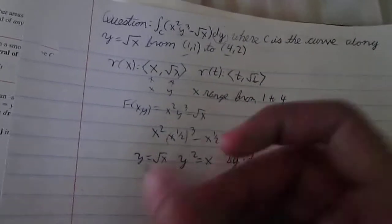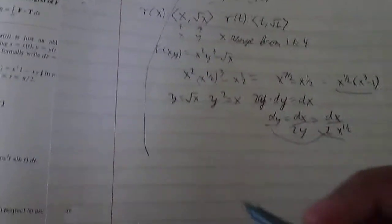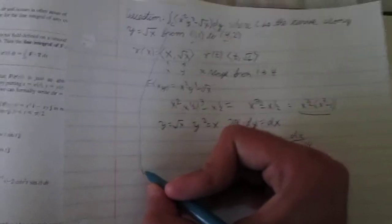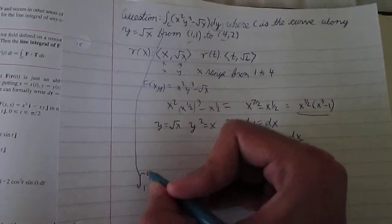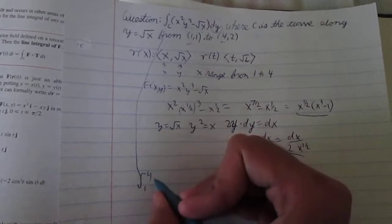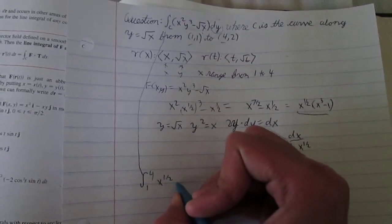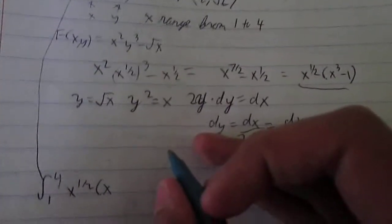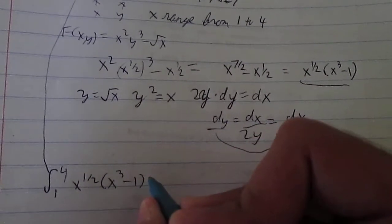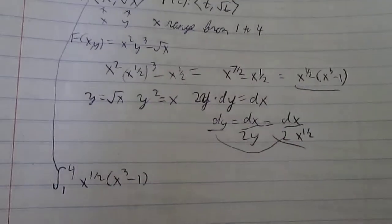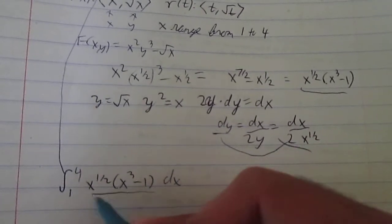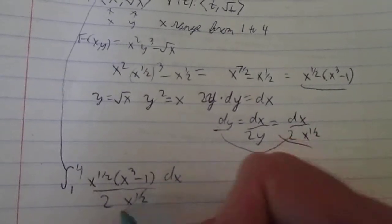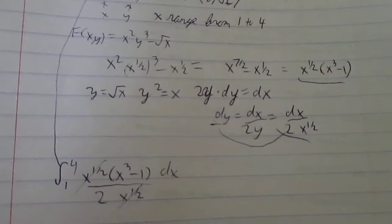So, now, our integral is, our x ranges from 1 to 4, as you can note these two points. x to the 1 half, x cubed minus 1. x to the 1 half, that is our integrand, and our dy, we plug in this. So, that's dx over 2 times x to the 1 half. So, we got lucky, and these two canceled out. So, that's what we have to solve for.